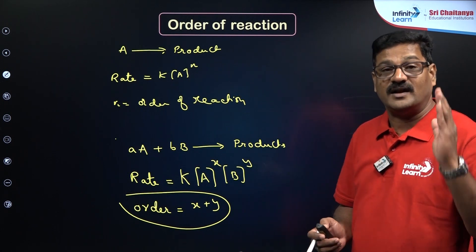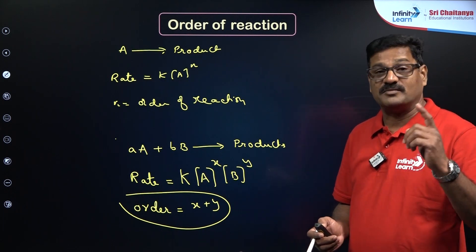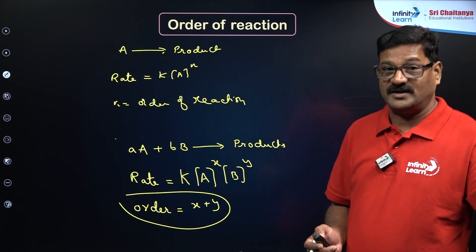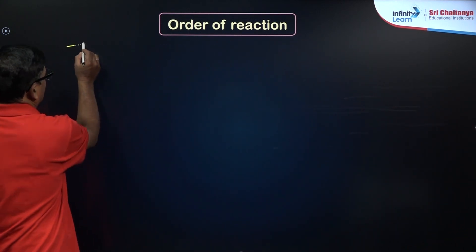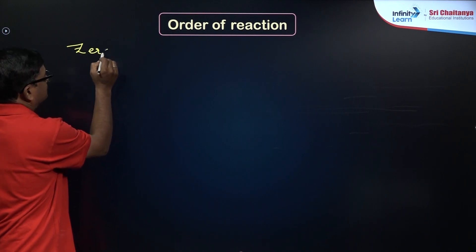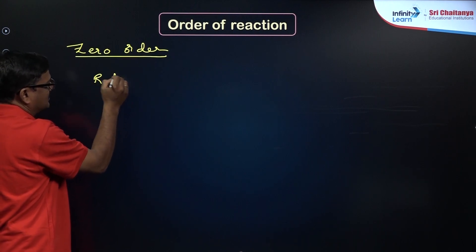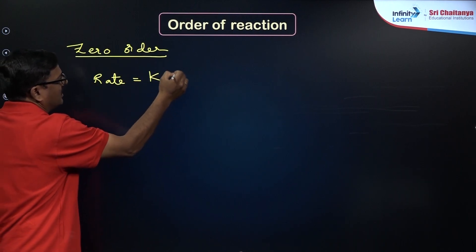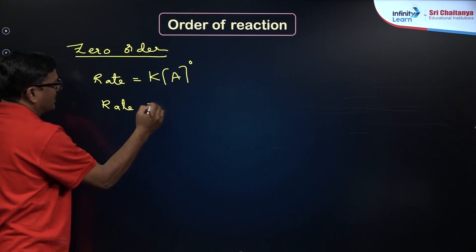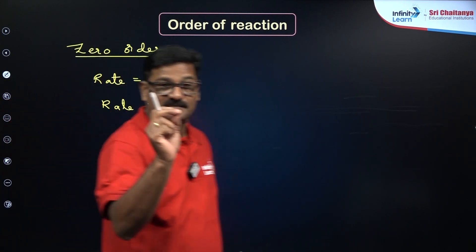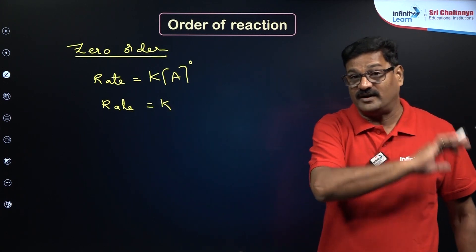In the NEET examination, focus on how the order and the rate constant are related, with emphasis on zero order and first order reactions. For the zero order reaction, the rate is given as k[A]^0, which means rate = k. A simple trick: for zero order reaction, the unit of rate constant is exactly equal to the unit of rate of reaction.